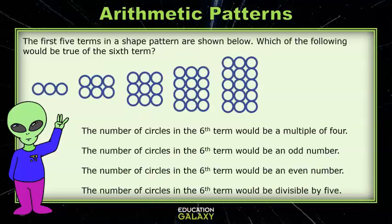Here's a picture pattern. The first 5 terms in a shape pattern are shown below. Which of the following would be true of the 6th term? Let's see. The first shape is 3 columns by 1 row. The second shape is 3 columns by 2 rows. Then 3 by 3, 3 by 4, and 3 by 5.